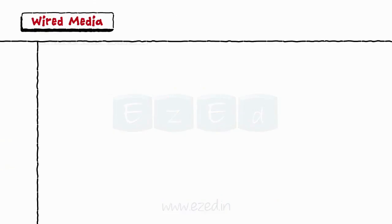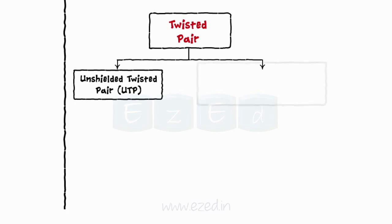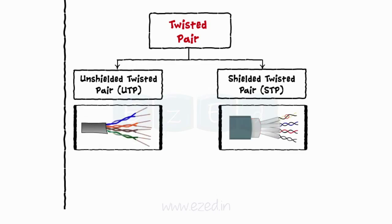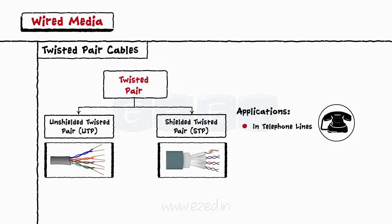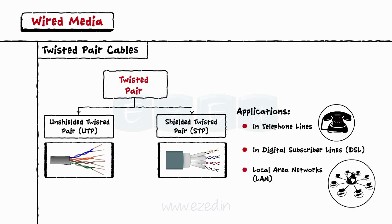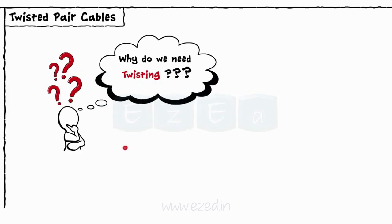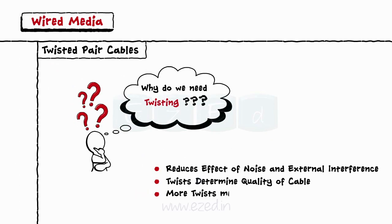We will start with the twisted pair cables. In this type of wired media, two wires are twisted around each other. We have two types of twisted pair cables: unshielded twisted pair cable and shielded twisted pair cable. The only difference between these two types is an extra shield provided in the shielded twisted pair cables. The applications of twisted pair cables are in telephone lines, digital subscriber lines (DSL), and local area networks (LAN). Twisting reduces the effect of noise or any other external interference. Number of twists per unit length determines the quality of the cable; the more the number of twists, the better the quality cable.